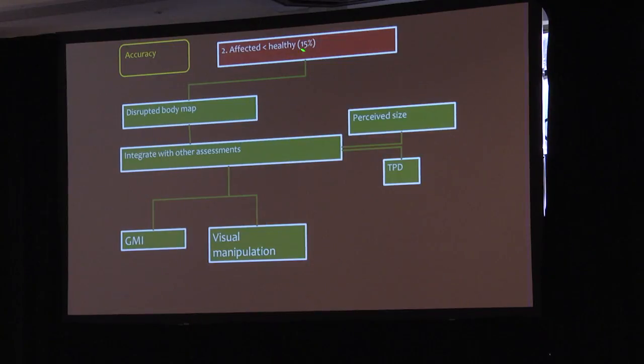Happens sometimes the affected is less accurate than the healthy by 15%. Then I will conclude the body maps, the neurotags that represent this body part, are not as precise as they could be. I'd then want to know about other assessments, so I'd be very interested in the perceived size of the body part, whether they feel it well. I'd be interested in two-point discrimination threshold. So this finding would be a trigger to do these assessments, and if the picture fits, then I would be interested in doing graded motor imagery.